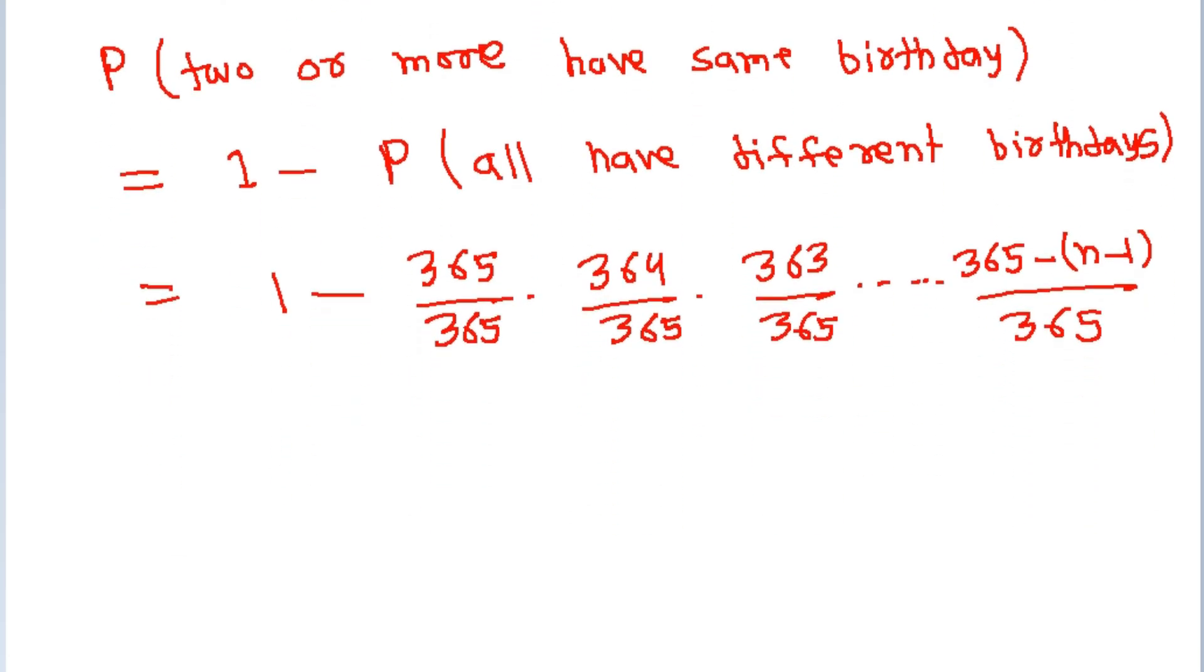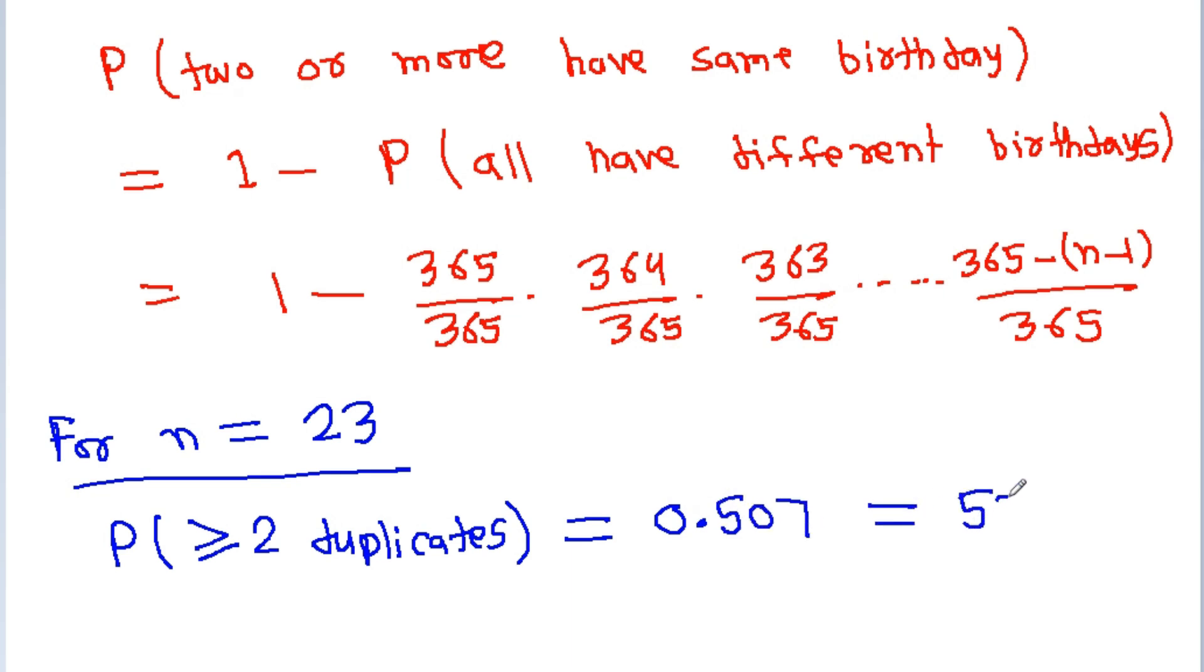For n equals 23, the probability of 2 or more having the same birthday, or greater than or equal to 2 duplicates: if we put n equals 23 in this, then we get 0.507, that is equal to 50.7 percent.